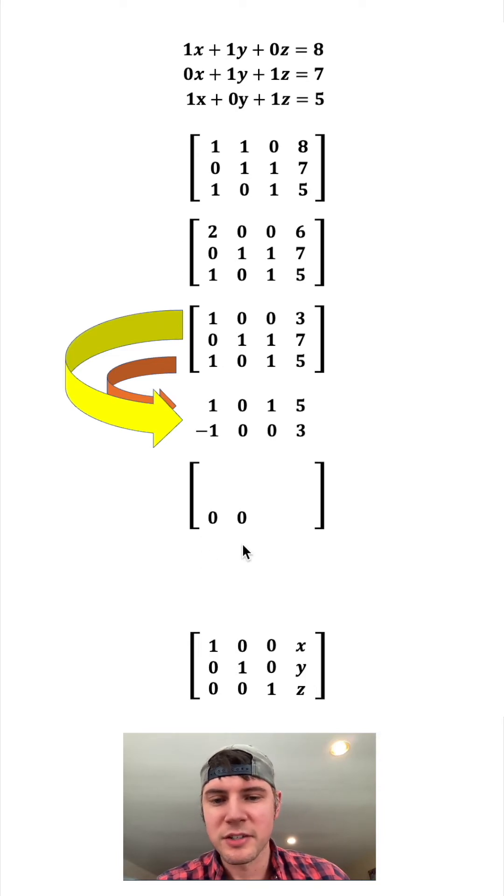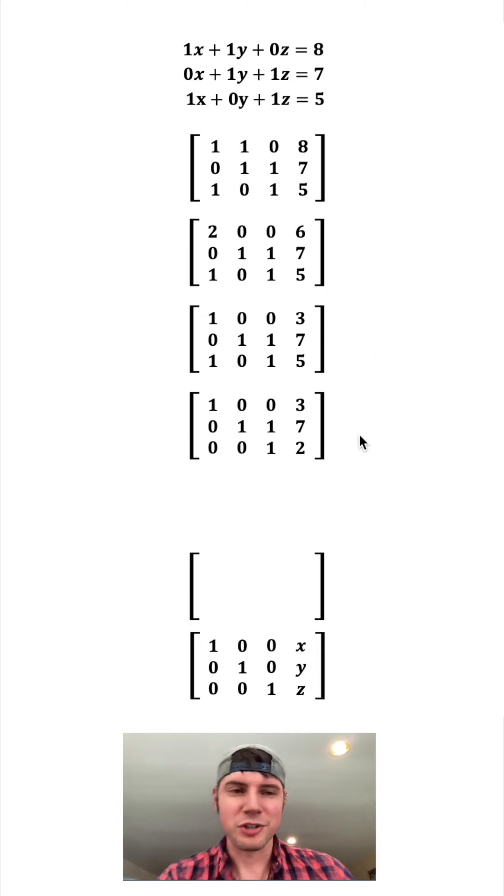So 1 minus 1 is 0. 0 minus 0 is 0. 1 minus 0 is 1. And 5 minus 3 is 2. And then I'm just going to copy down these other two rows.